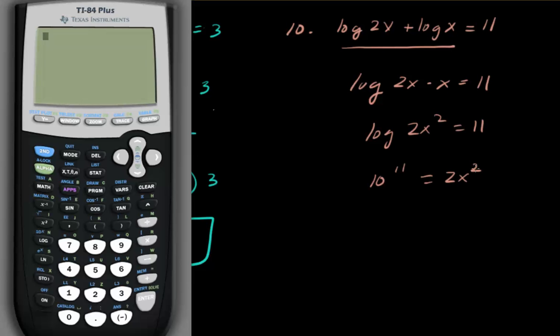Base 10 to the 11th equals 2x squared. Well, once again, we're going to have a large number. Divide both sides by 2. So x squared equals 10 to the 11th over 2. I'm going to go ahead and square root that.